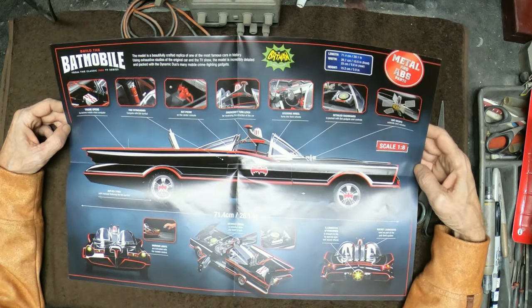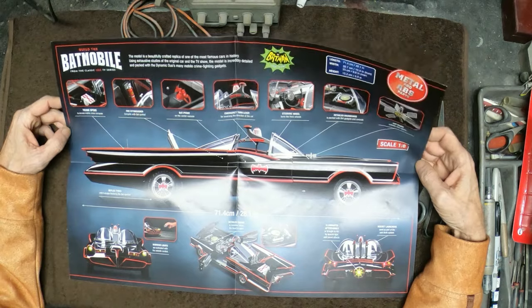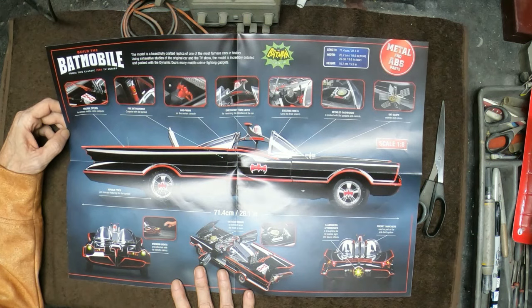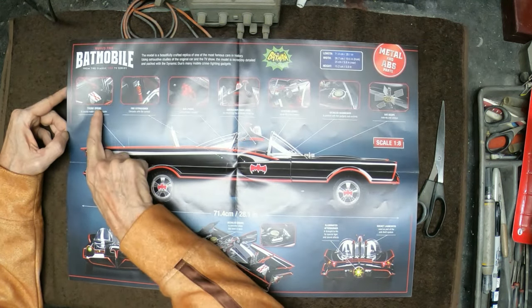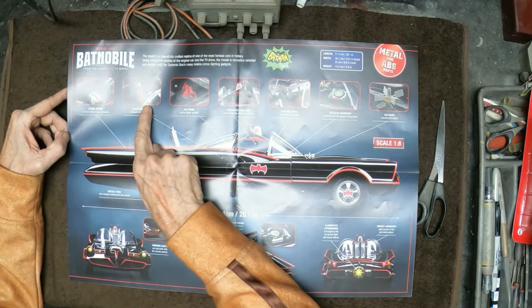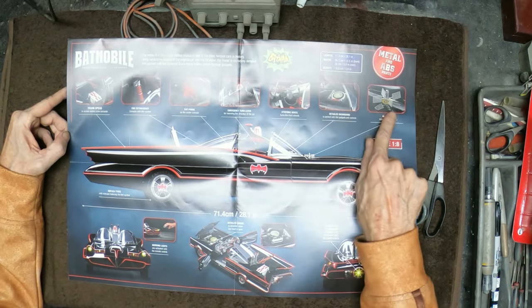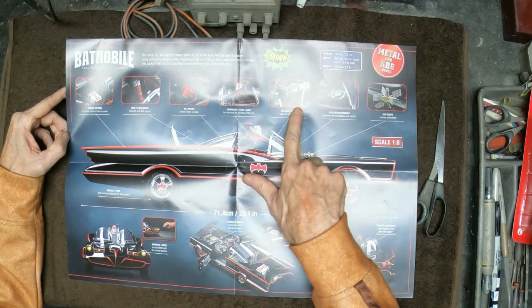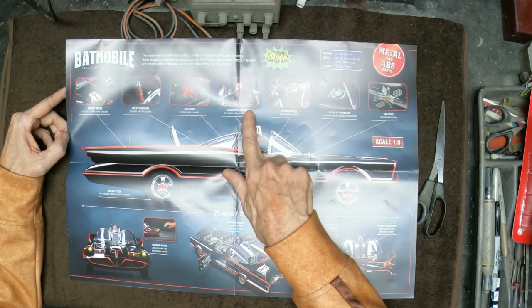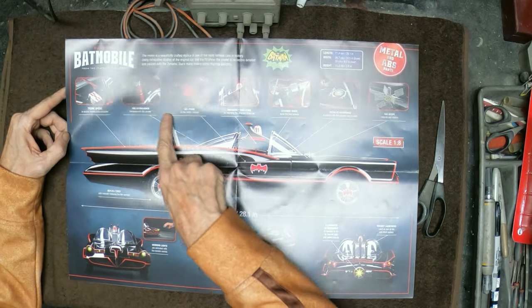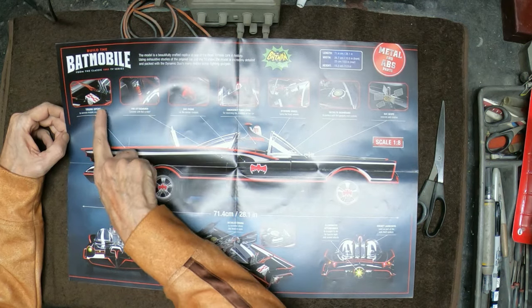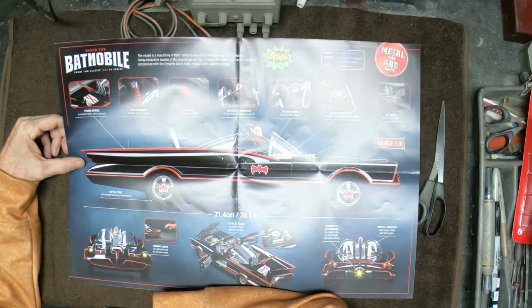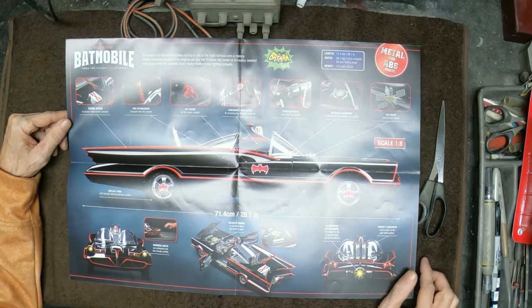It has a remote control feature for some lighting and sound effects that we'll get into later on. You can see here all the iconic Batman accessories that we were used to, the bat scope, detailed dashboard, the iconic steering wheel, emergency turn lever, bat phone, fire extinguisher. And of course, the trunk opens on this vehicle so we can see the mobile crime lab, as they called it on the television show.